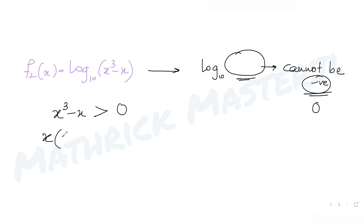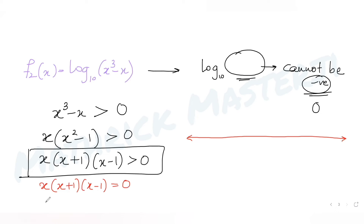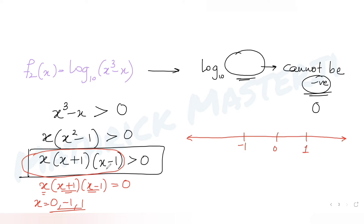So we need x³ - x > 0. Factoring out x gives x(x² - 1) > 0, which factors further as x(x + 1)(x - 1) > 0. The product of these three factors must be positive. Setting each factor to zero gives x = 0, x = -1, and x = 1 as boundary points on the number line.